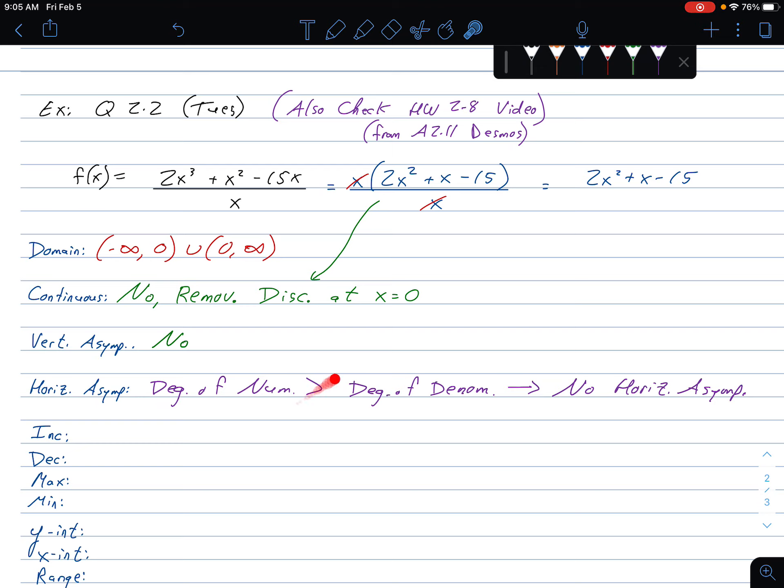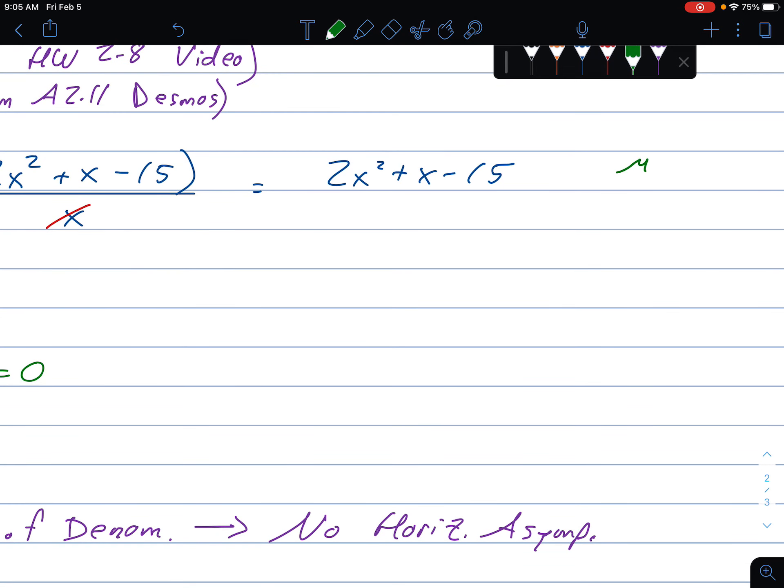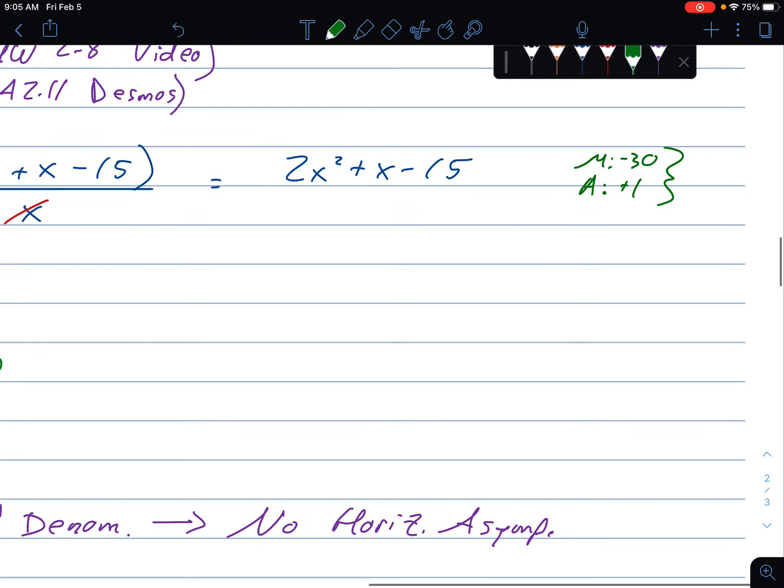Because if I look at my reduced form, this gives me a way to find my X intercepts. I know this is going to cross the X axis because this is the reduced form. I can factor it. How would I factor this? Two numbers that multiply to A times C, negative 30, and add to my B value, 1. That's 6 and negative 5.